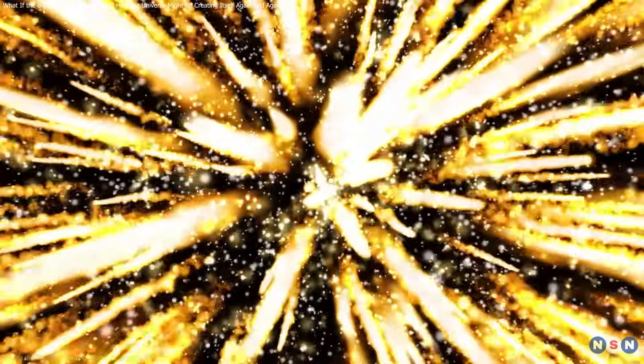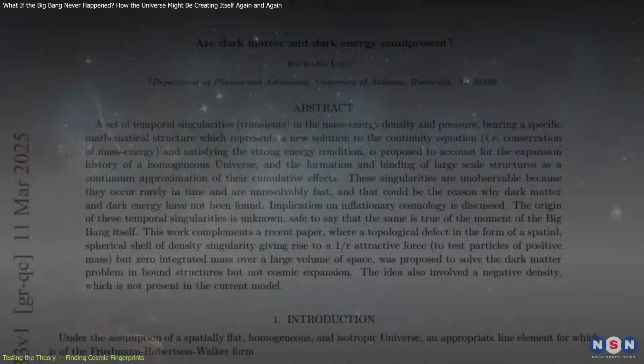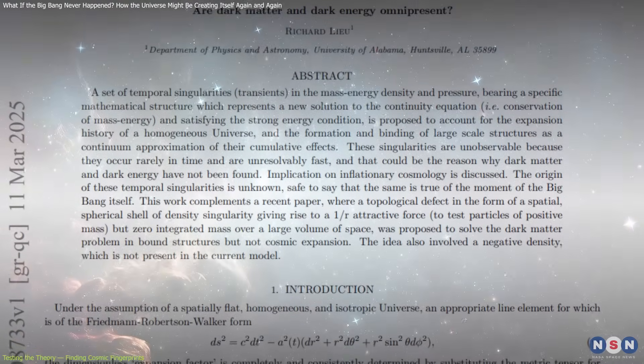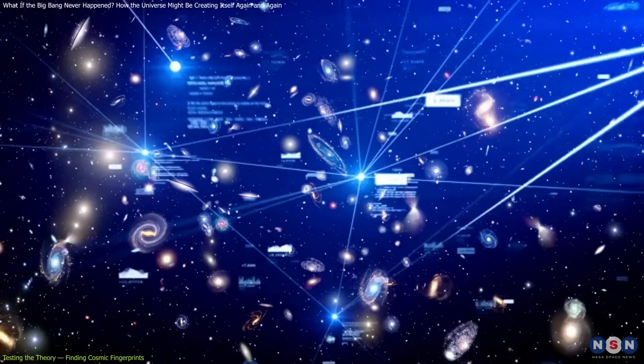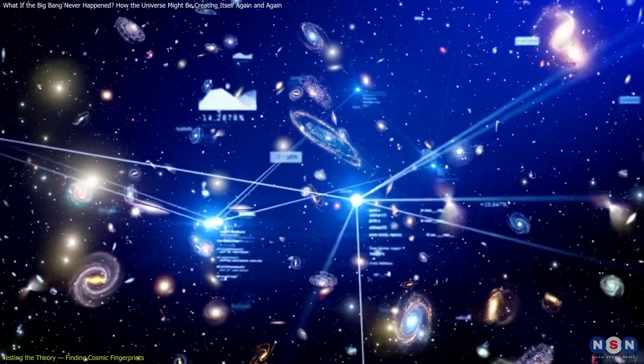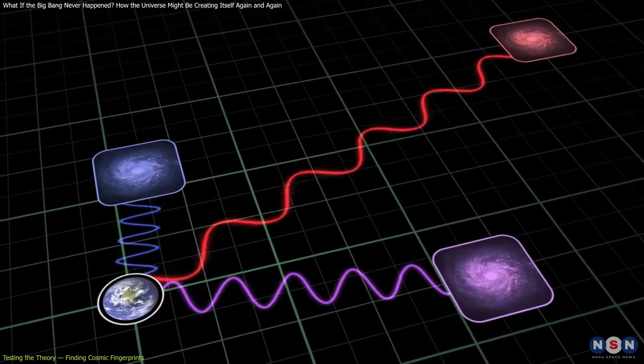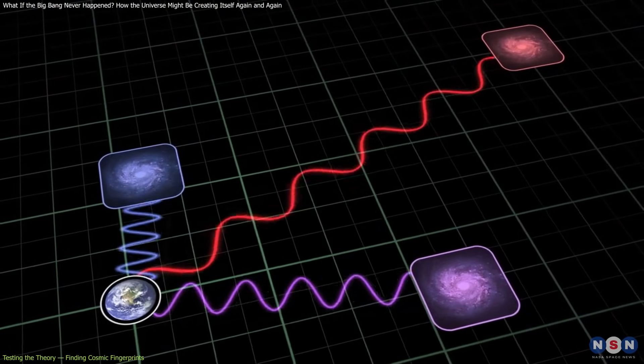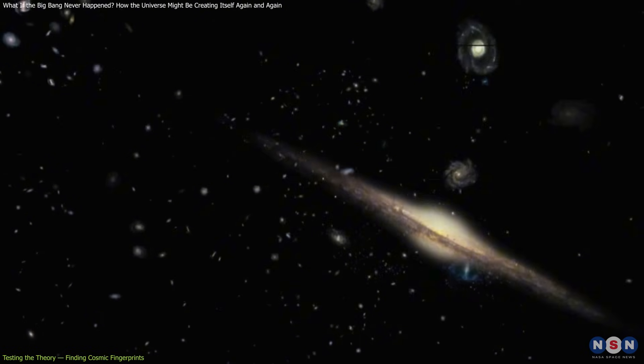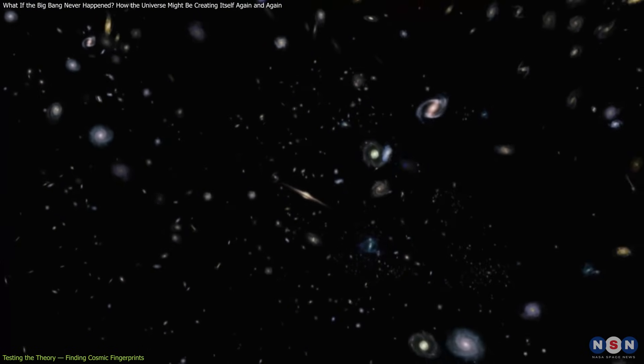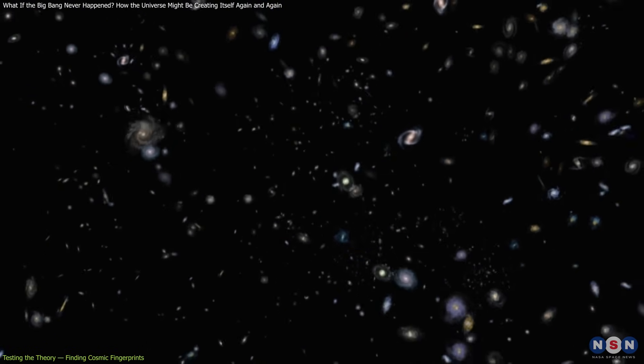Any new model must be testable. Fortunately, Liu's hypothesis doesn't rely on futuristic instruments, only on new interpretations of existing astronomical data. One place to look is in the red-shift-distance relationship, the core of Hubble's law. Traditionally, galaxies farther away appear to recede faster, forming a smooth, upward trend.